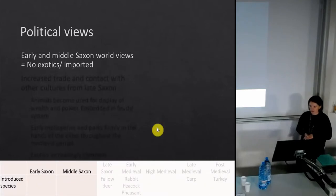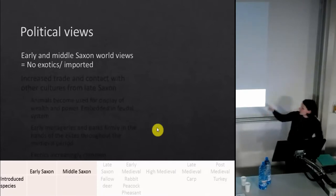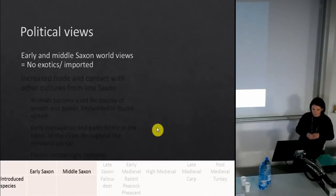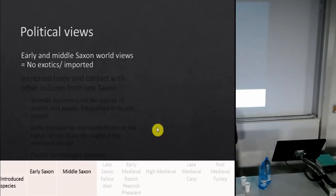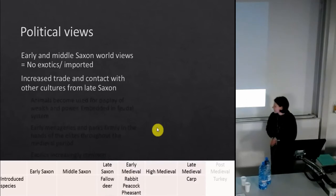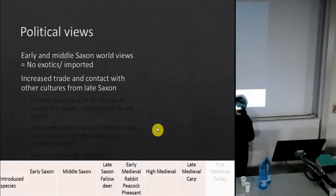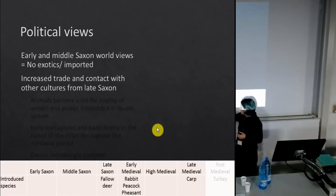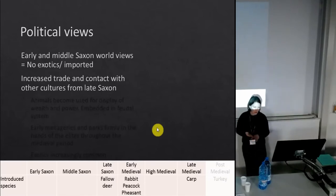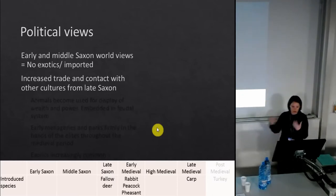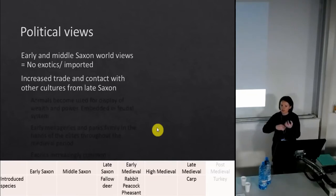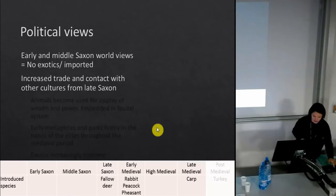The second case study looks at political views — status and how the politics of the country are shown through animals. In the early and middle Saxon period, worldviews seem fairly narrow: there are no exotic animals in the archaeological record. But in the late Saxon and early medieval period we get the introduction of fallow deer, and following the Norman Conquest, rabbits, peacocks, and pheasants appear — implying increased trade and contact with other cultures, with animals brought in as statements of power and status.